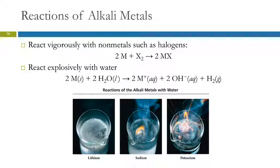They react with nonmetals like halogens. So, here, an alkali metal such as sodium, lithium, will react with a halogen like chlorine or iodine and form an ionic compound.